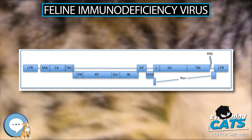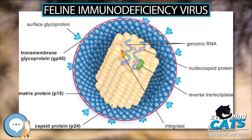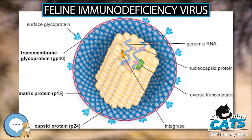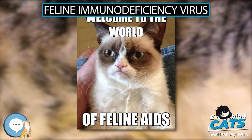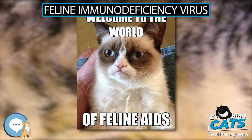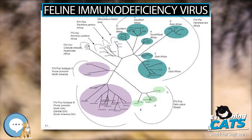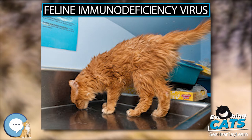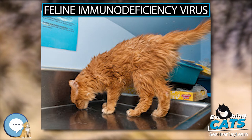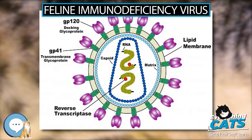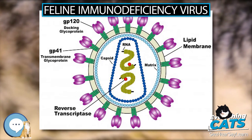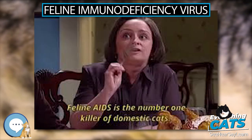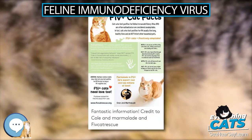Newborn kittens may test positive for up to 6 months, and most will thereafter gradually test negative. It is thought that this is due to antibodies transferred to the kittens via the mother's milk; however, these antibodies are transient so subsequent testing will be negative. Once they have received vaccinations against FIV, they will in the future always test positive, as the various blood tests detect the antibodies that have developed in response to vaccination. FIV is also known in other feline species and is endemic in some large wild cats, such as African lions.